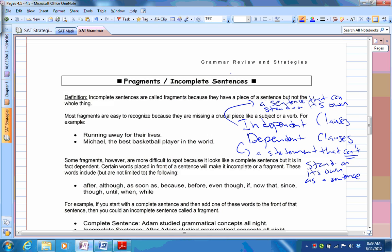So that's what we're talking about here. When you have incomplete sentences, you're going to have dependent clauses, like running away for their lives. That can't stand on its own. You probably would need to say this person was running away for his life, sure, or these people were running away for their lives, sure. Michael, the best basketball player in the world, that can't stand on its own. You can say Michael, the best basketball player in the world, won six NBA championships or something like that.